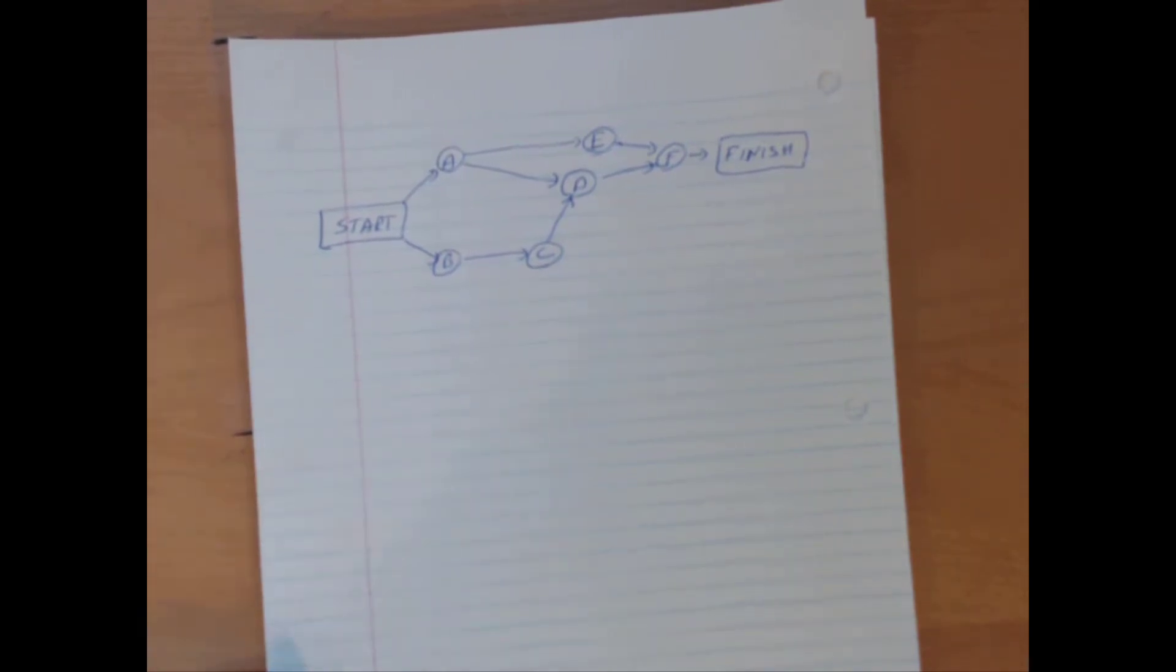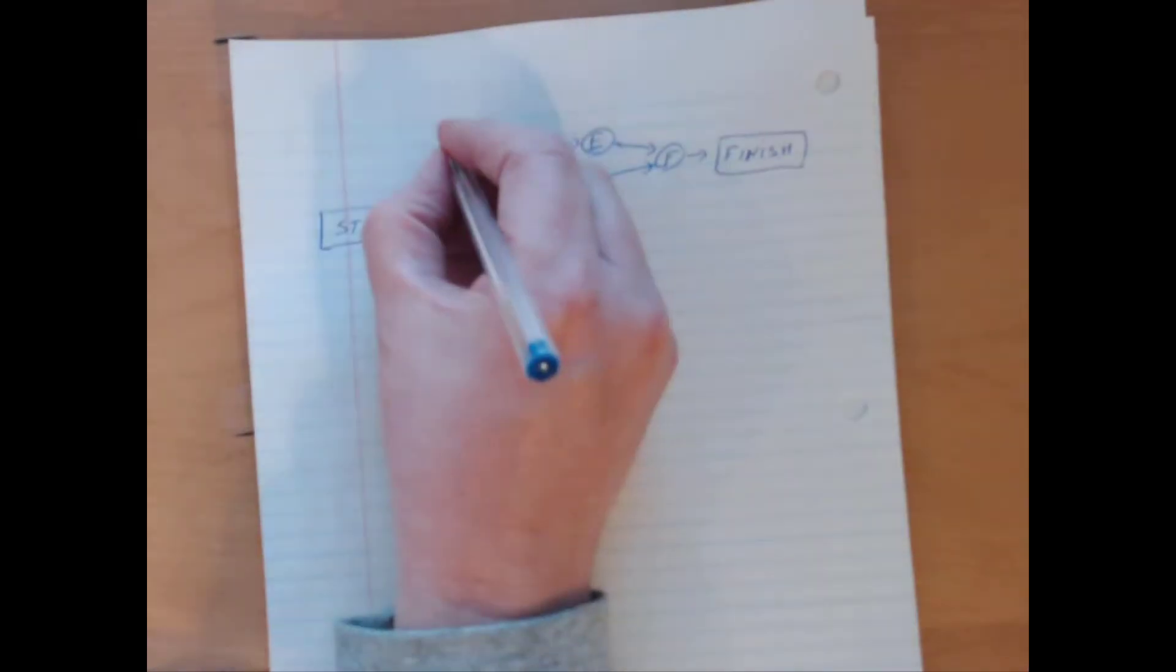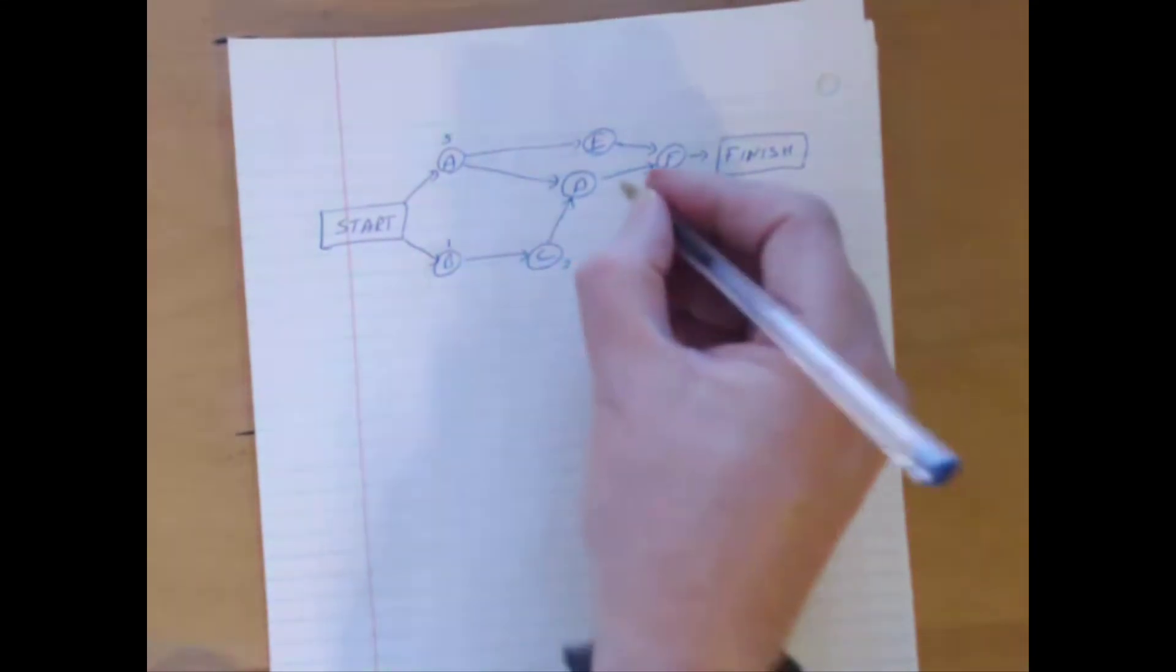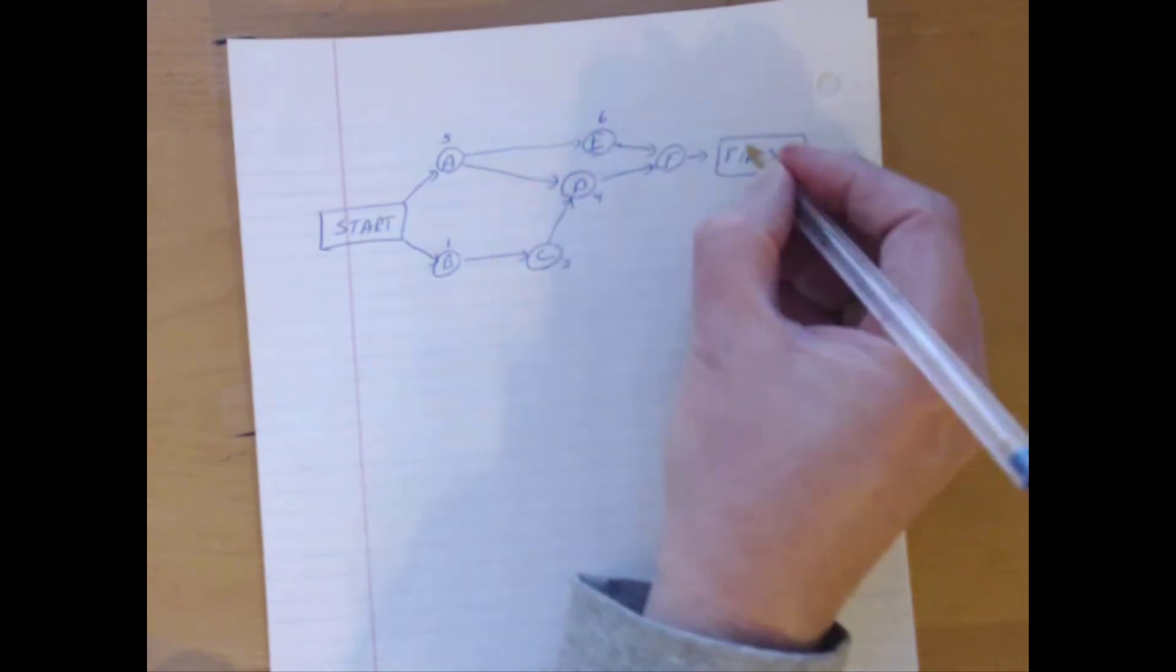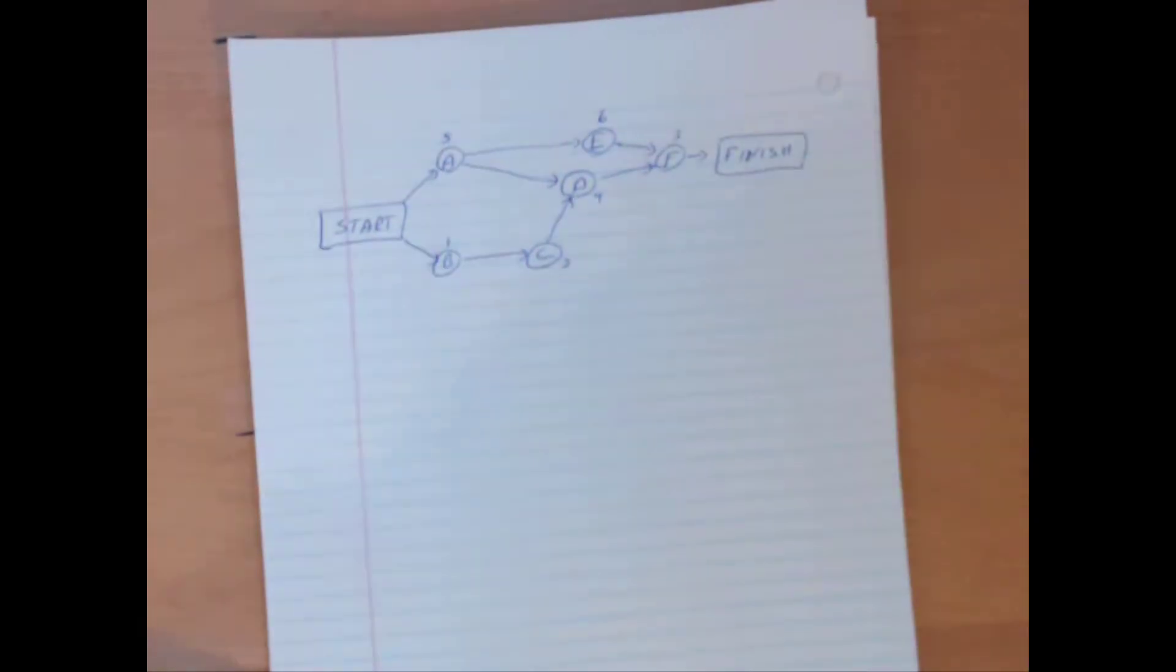Now I am just going to write down the times or the durations of each one of these projects just above the activity levels. So 5, 1, 2 for C, 4 for D, 6 for E, 3 for F. Just lets me keep track of what is happening across this particular question. It also lets me kind of start to think of critical paths which are an important part of what we want to do.